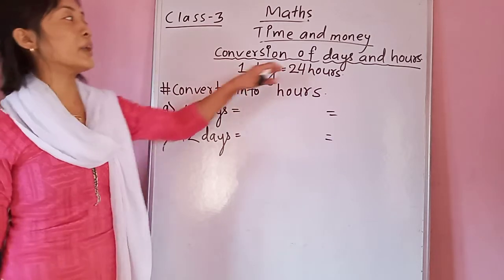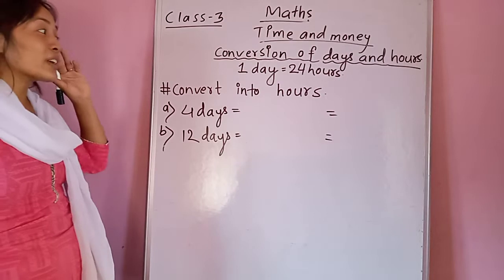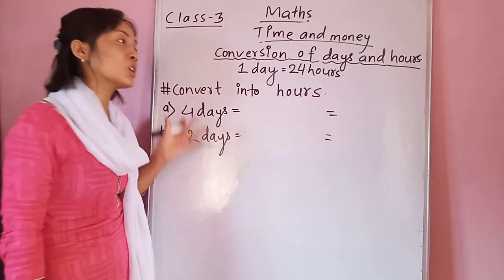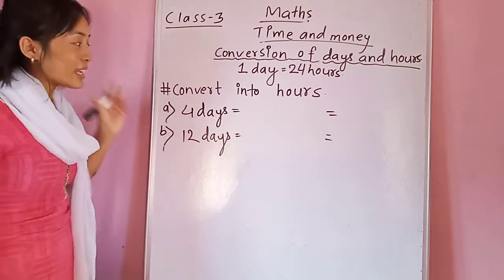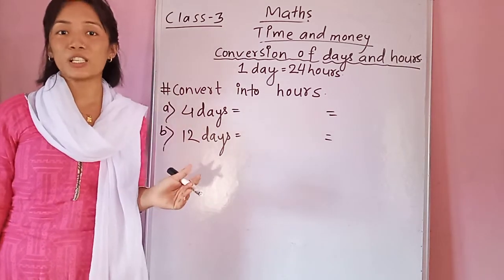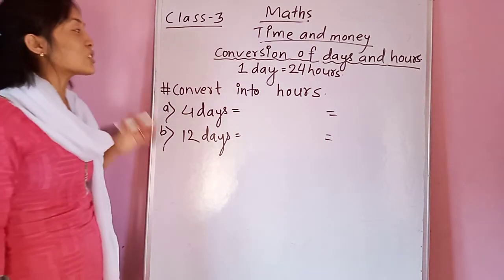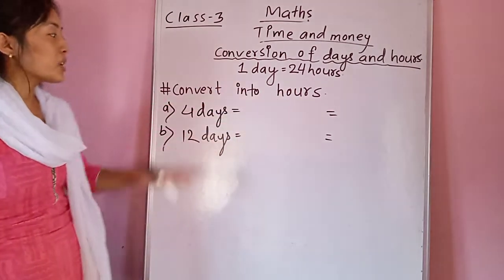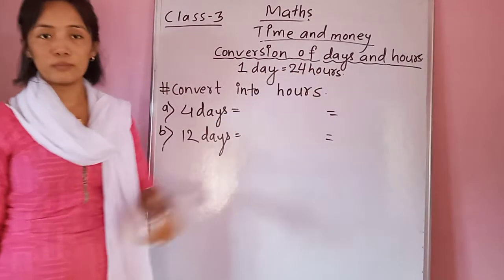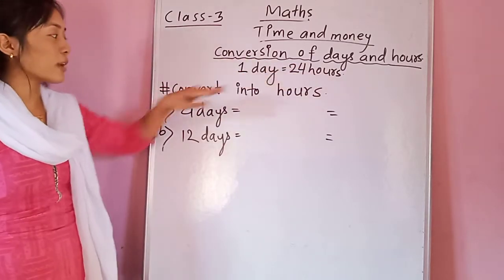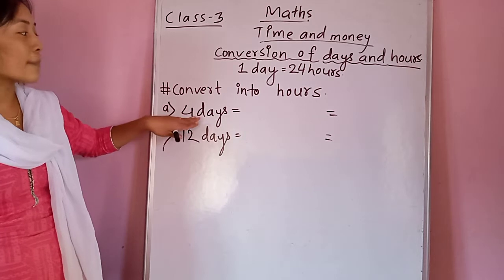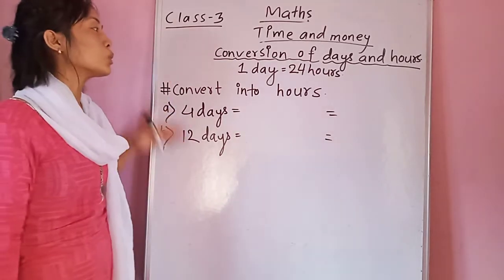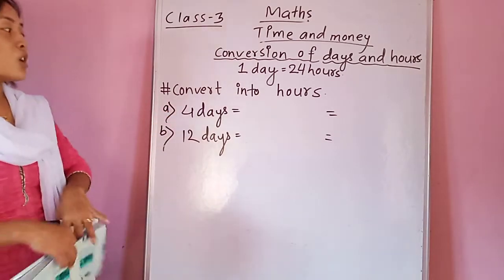That means one day equals 24 hours. Here is four days and you have to multiply four by 24 to get the answer. You will not use multiplication in all cases — only when the question asks you to convert a bigger unit into a smaller unit. A day is bigger than an hour, so here you convert the bigger unit into the smaller one using multiplication.